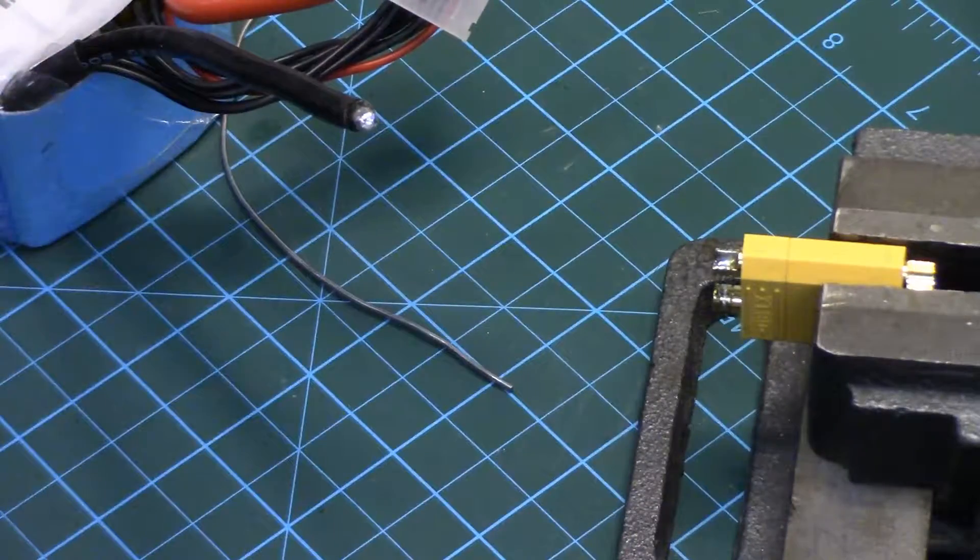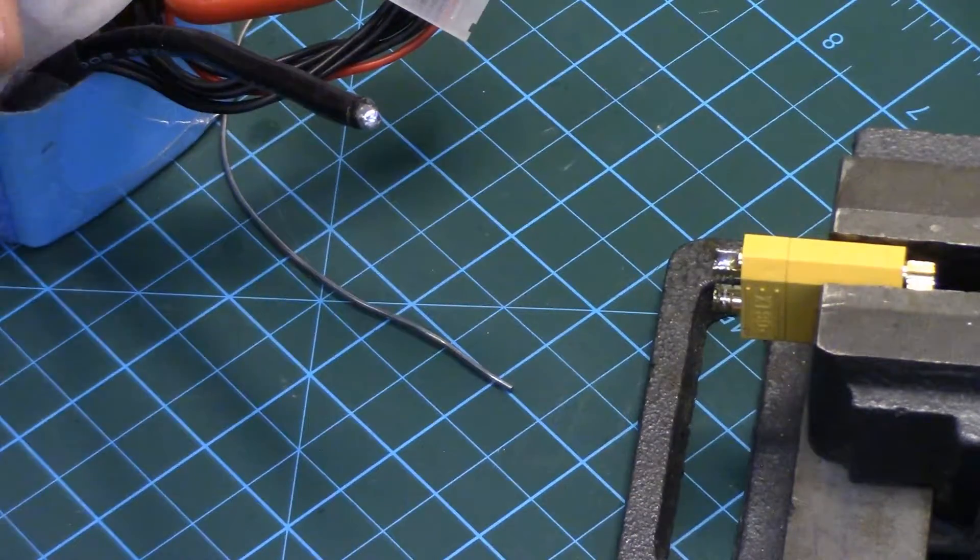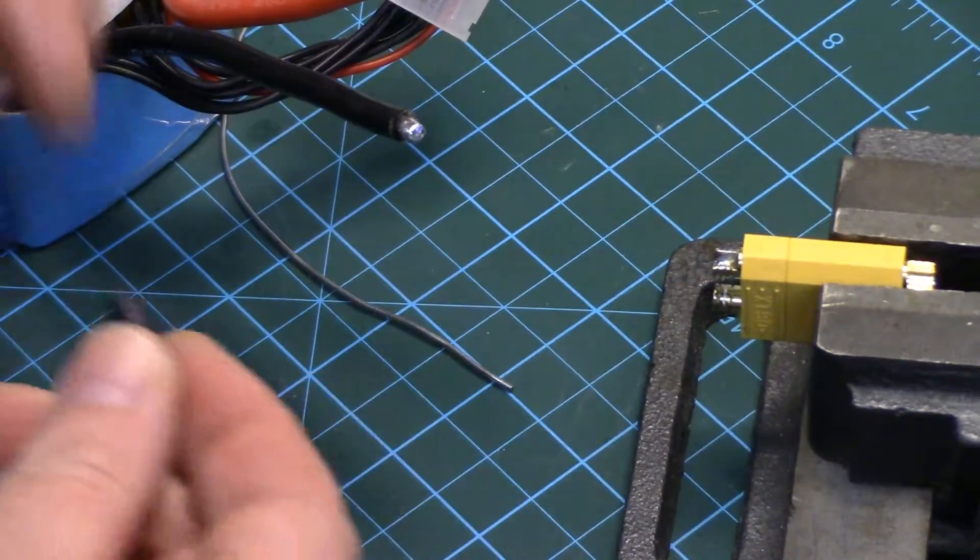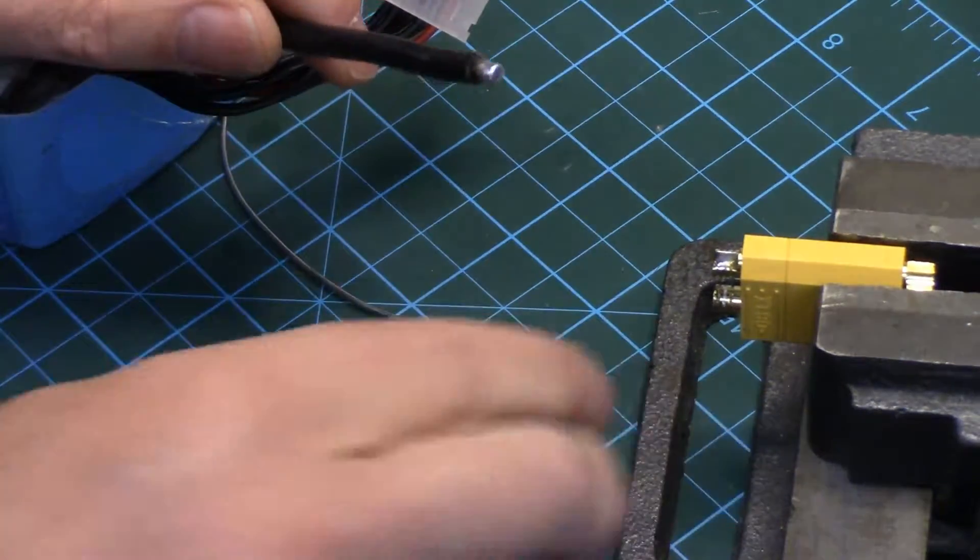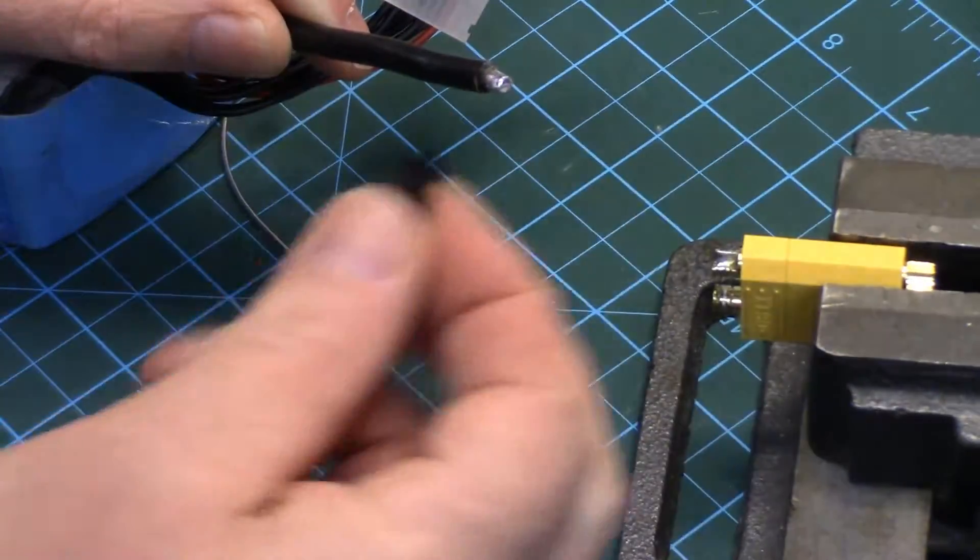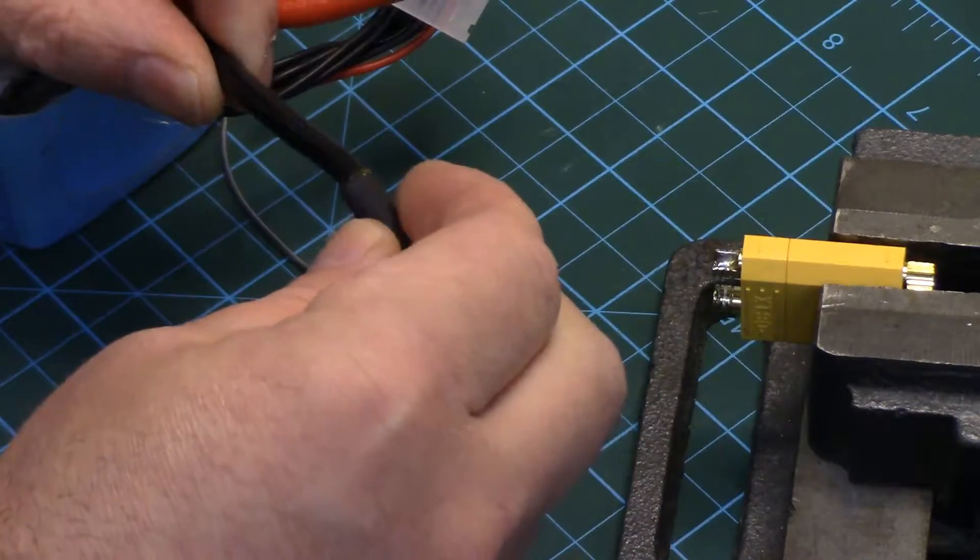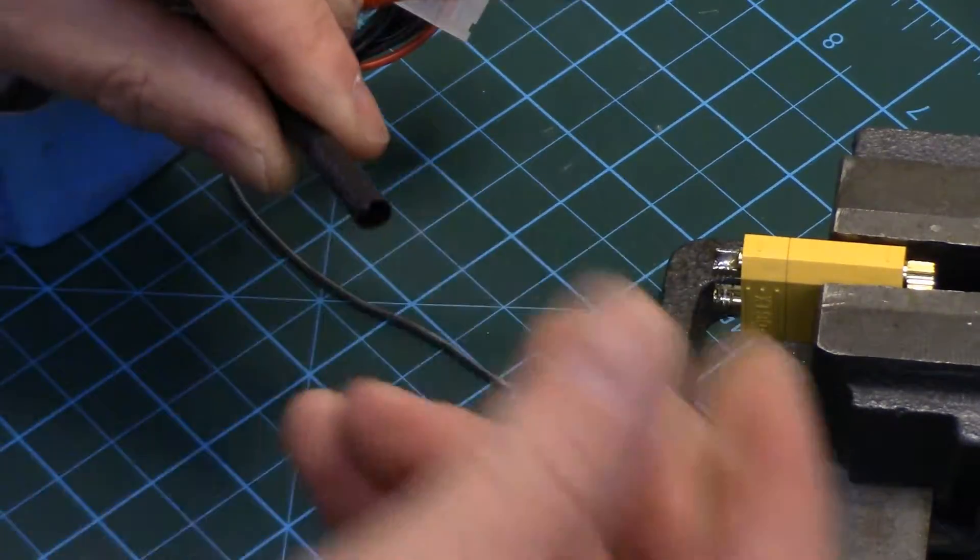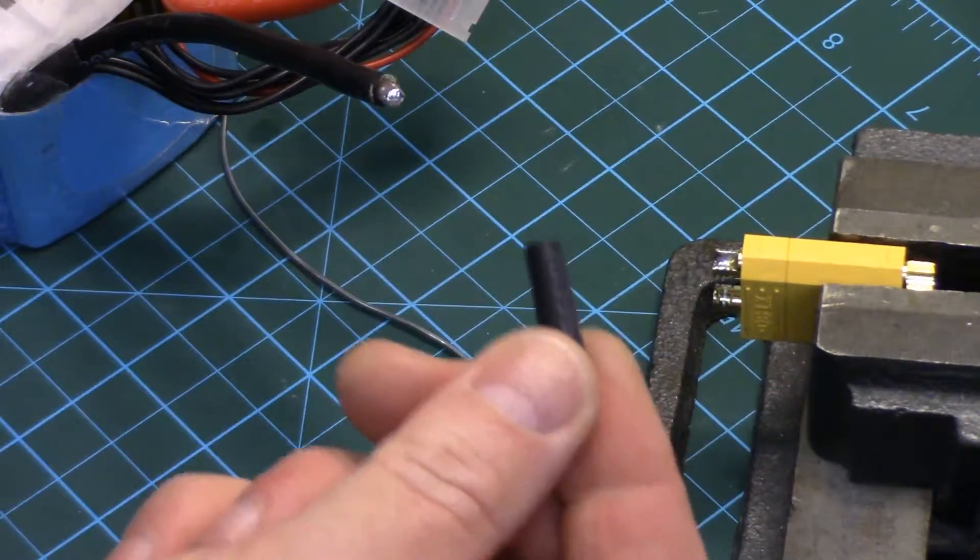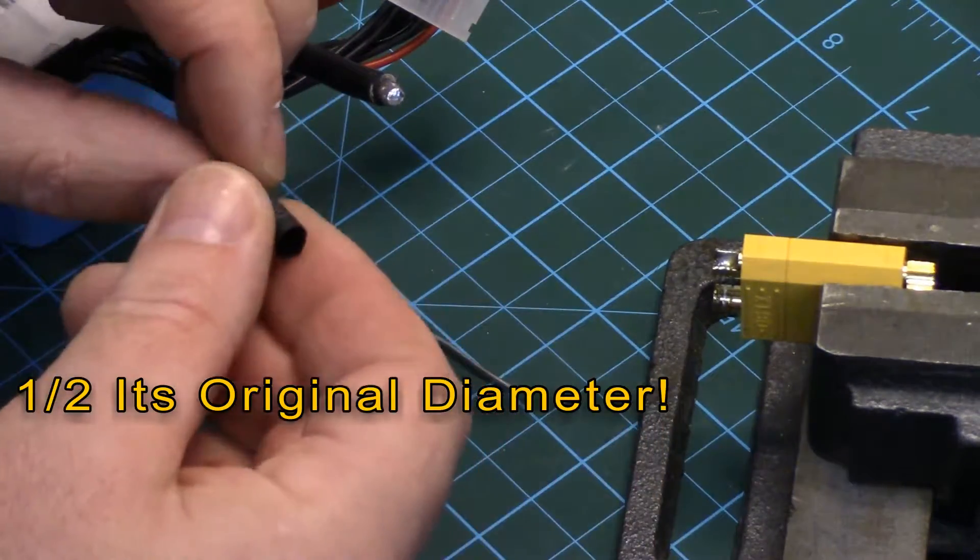Now, the first thing you want to do is put your heat shrink on your wiring. Because once it's soldered on, you can't fit it afterwards. Some of the Amass connectors, they have those little end boots that can go over and you don't have to use the heat shrink. But I like the ones with the heat shrink, a little less expensive. Heat shrink, by the way, it shrinks roughly twice its original diameter.